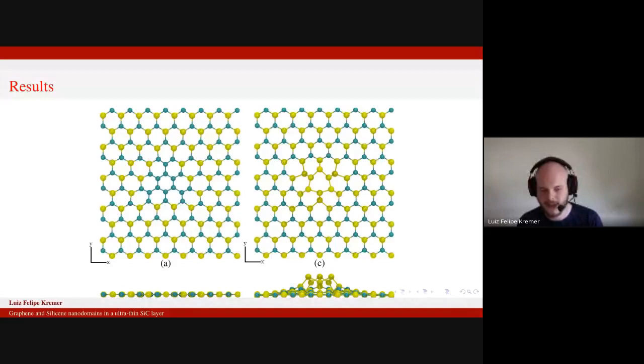As you can see in the bottom, when we have a graphene nanodomain, the layer stays flat as we expected from graphene. But when we go to the silicon nanodomain, the domain rises above the layer and its final structure really resembles the silicene structure that's not flat, but has a buckled structure.